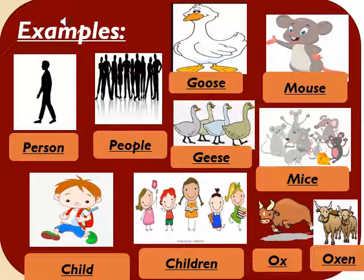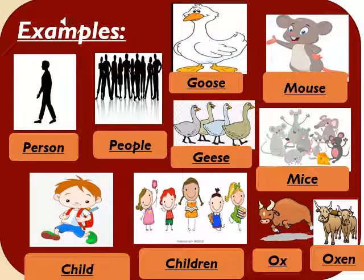Examples following rule number 8: 'person' is singular and 'people' means more than one person. Goose — singular; geese — plural. Mouse — singular; mice — plural. Child means one child; children means more than one child. Ox means one ox; oxen means more than one ox.